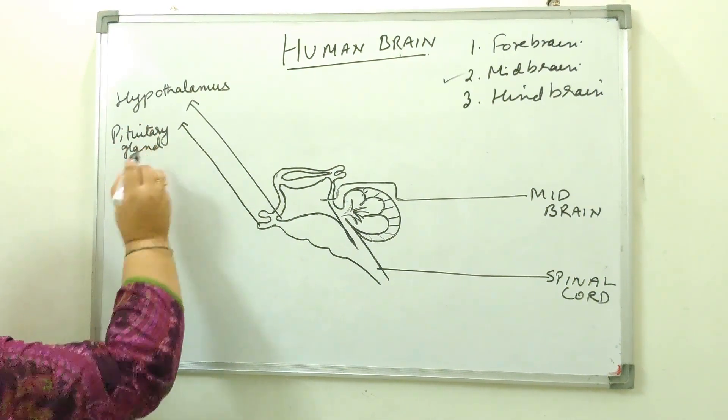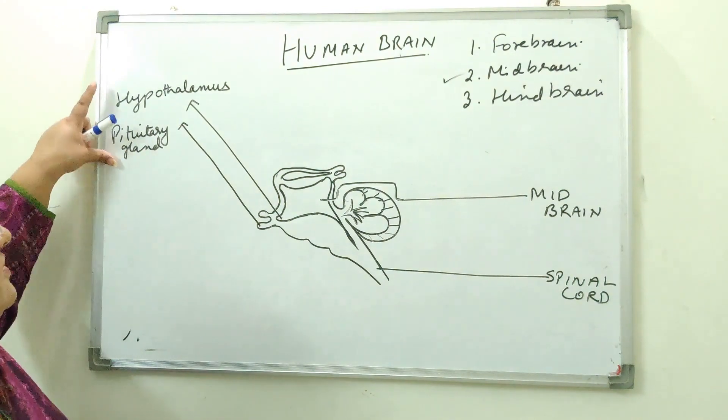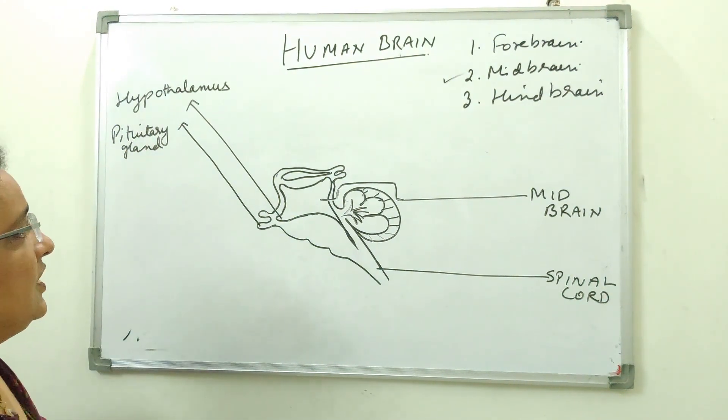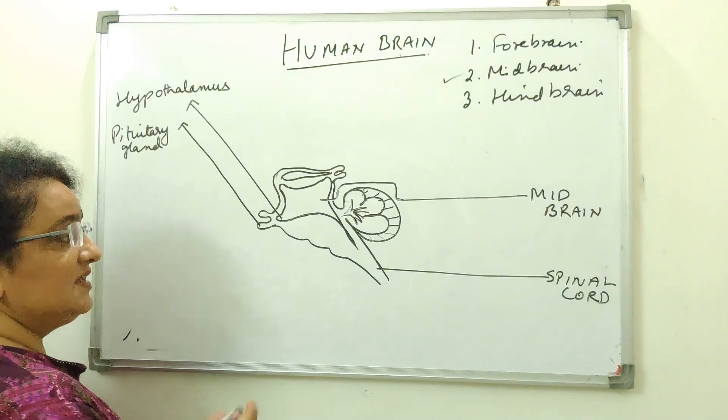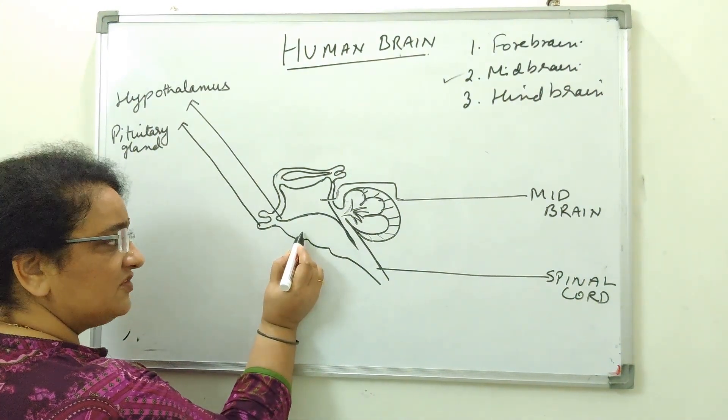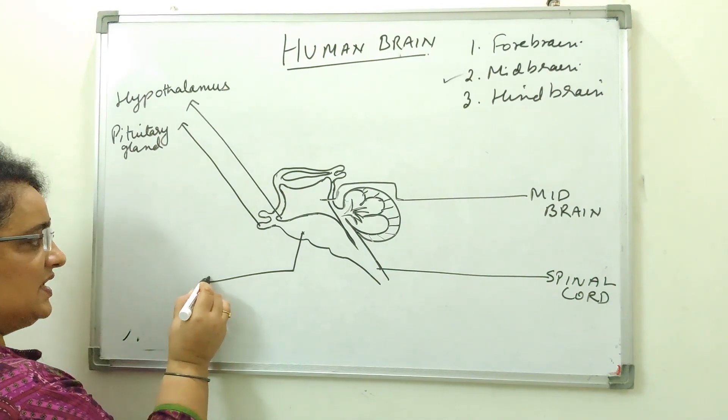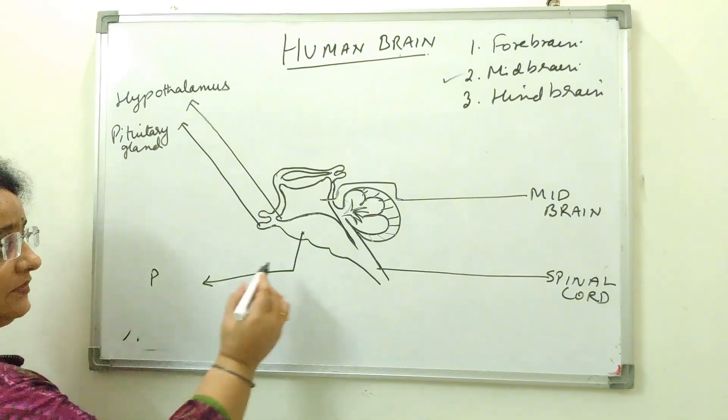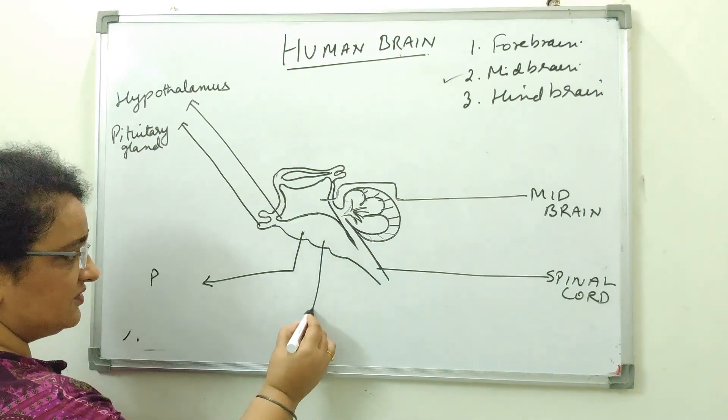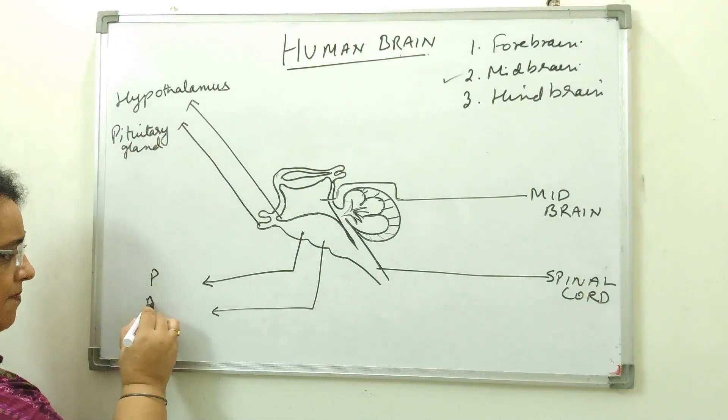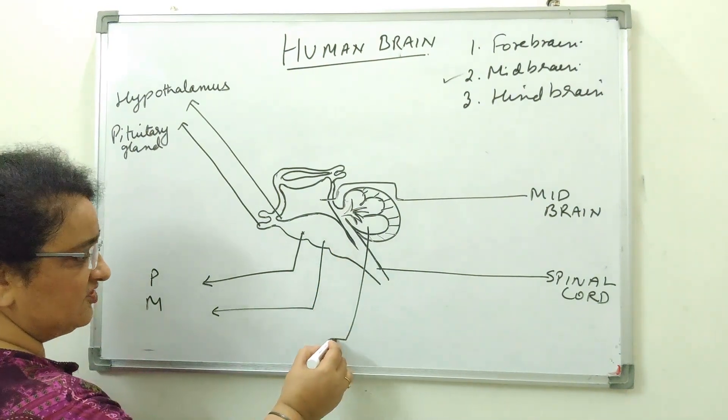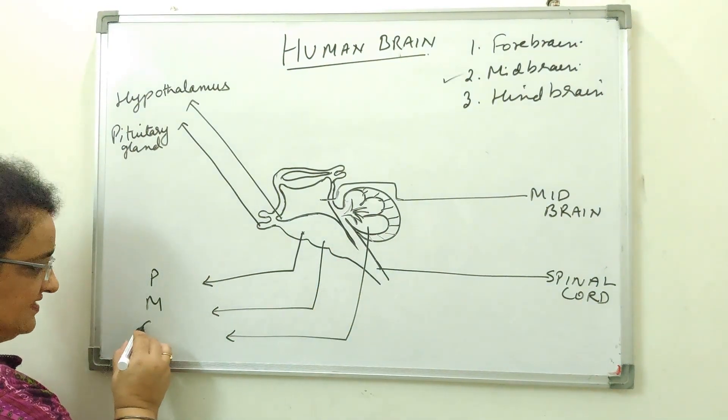These two are the endocrine glands which are associated with the brain. Next, now what we are going to do is, say this part, this part, name it as, I will name it as P, below this part, M, and this triode structure, C.